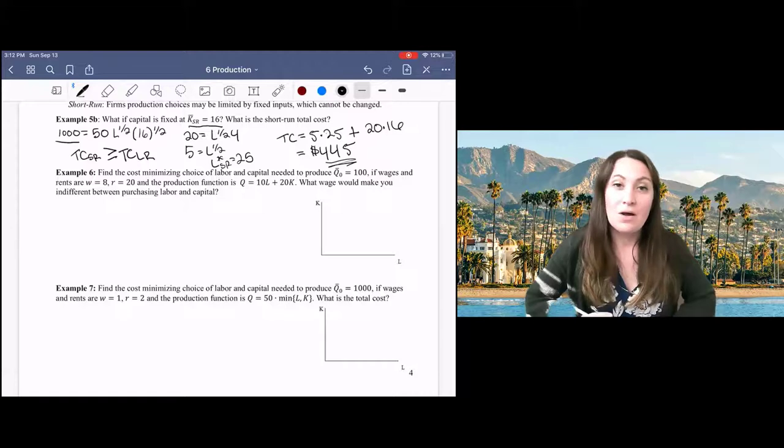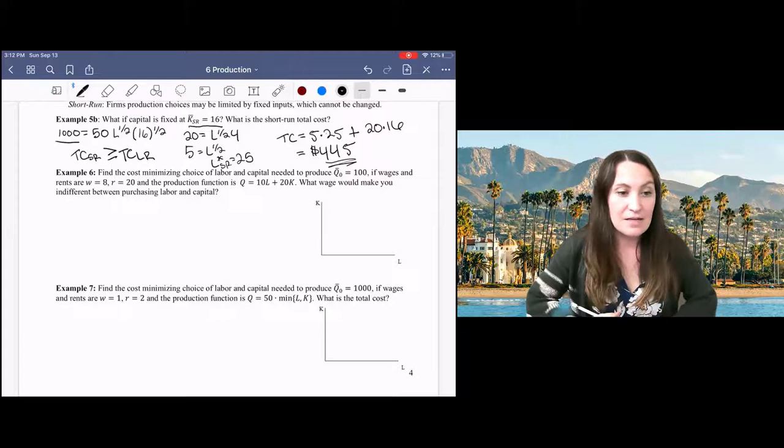So up until this point, we've been using Cobb-Douglas production functions, and here we're going to do a couple examples using perfect substitutes and perfect complements instead.